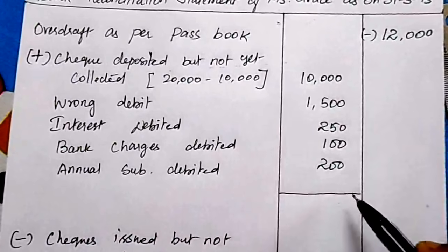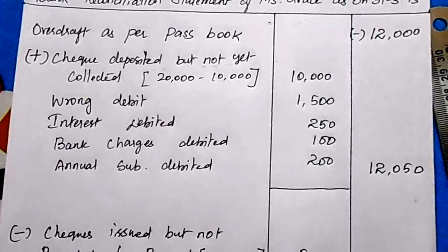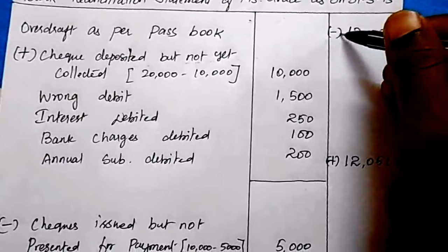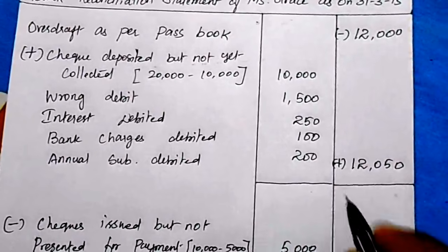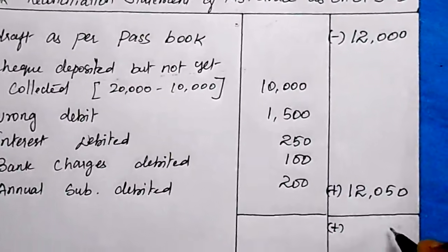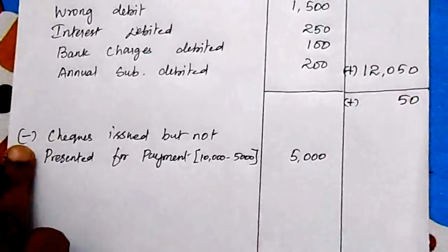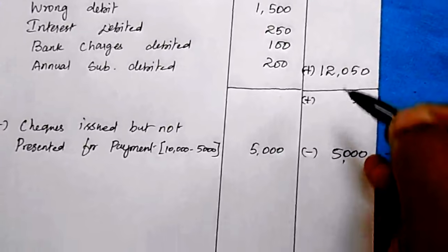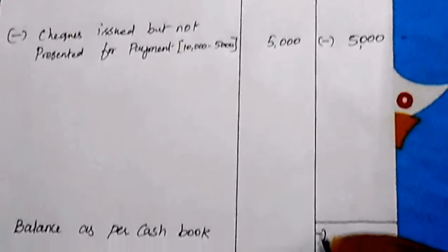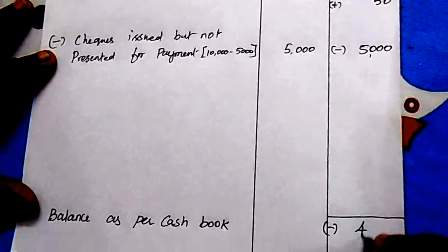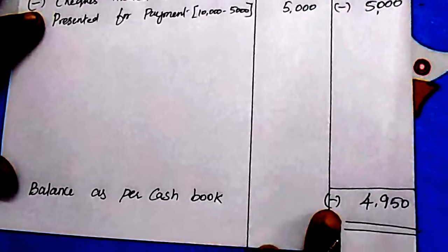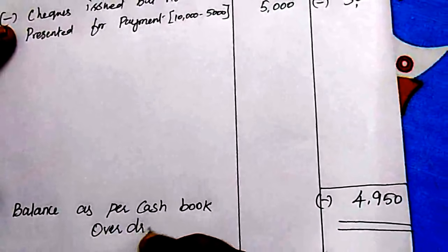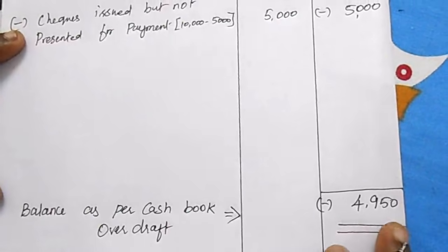Total additions: Rs. 12,050. Starting balance: minus Rs. 12,000 plus Rs. 12,050 = plus Rs. 50. Subtract checks issued but not presented: Rs. 5,000. Rs. 50 minus Rs. 5,000 = minus Rs. 4,950. This is an unfavorable balance — overdraft as per cash book is Rs. 4,950. The bank reconciliation statement is complete.